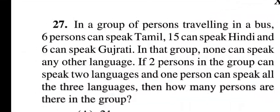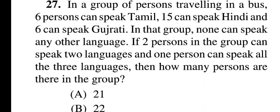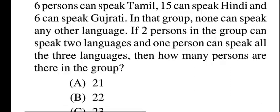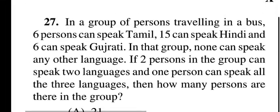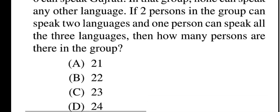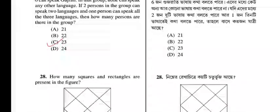Question twenty-seven: in a group of persons traveling in a bus, six can speak Tamil, 15 can speak Hindi, and six can speak Gujarati. None can speak any other language. If two persons can speak two languages and one person can speak all three languages, how many persons are in the group? Options: 21, 22, 23, 24. Question twenty-seven, option C is correct: 23.